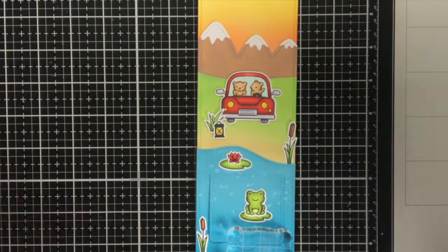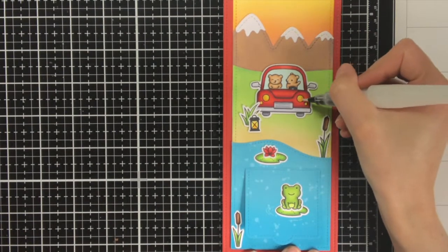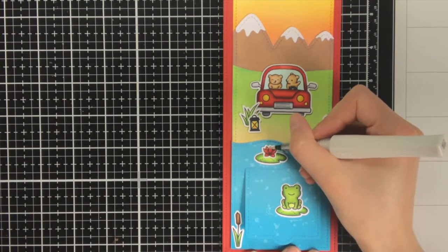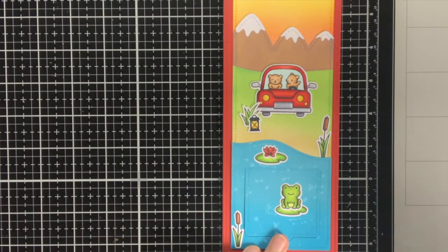To frame the card I also die cut a red panel off camera, and this die is from the slimline set with the sliders. And if you have watched my videos before, you already know what embellishments I am going to use.